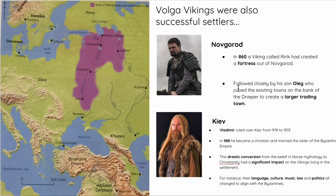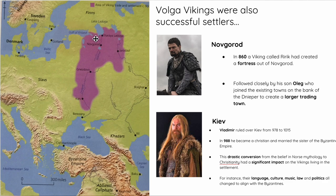Key figures controlling these areas: Oleg was in Novgorod and Vladimir was in Kiev. Vladimir is quite key because he actually converted to Christianity, married the Byzantine Emperor's sister, created an alliance, and changed the culture and life in these settlements. The Volga Vikings were great raiders, great traders, but also great settlers who stayed in these settlements for a long time — that's important for your exam.